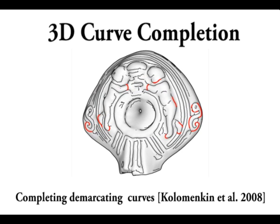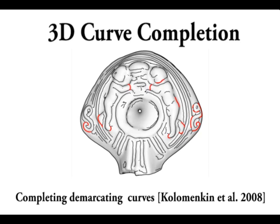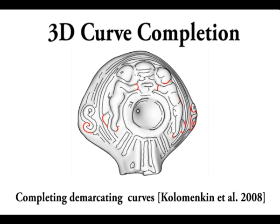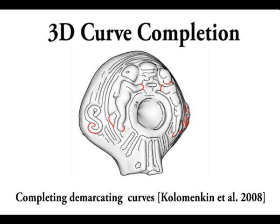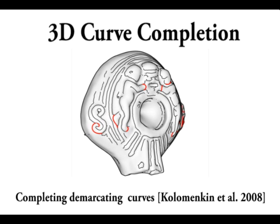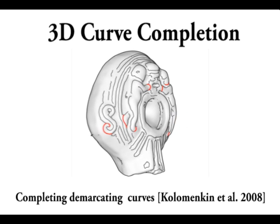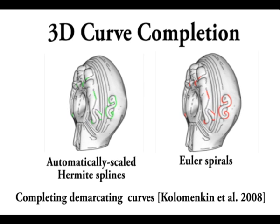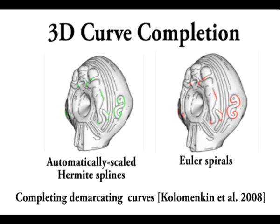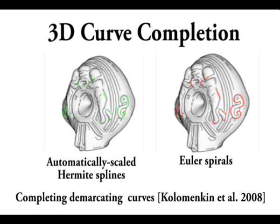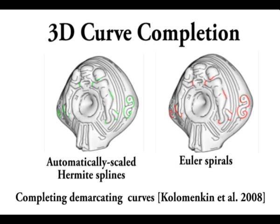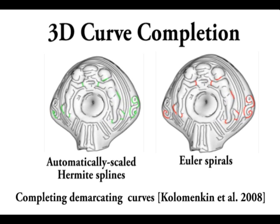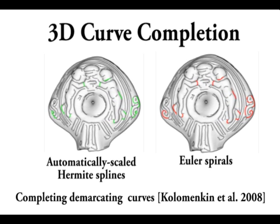In this application, the generated curves should lie on the surface. Since our curves are not constrained to lie on any surface, the produced 3D Euler curves are projected to the surface. Here the results are compared to automatically scaled Hermit splines in green. Note how our curves in red manage to capture the S shape, in contrast to the automatically scaled Hermit splines.